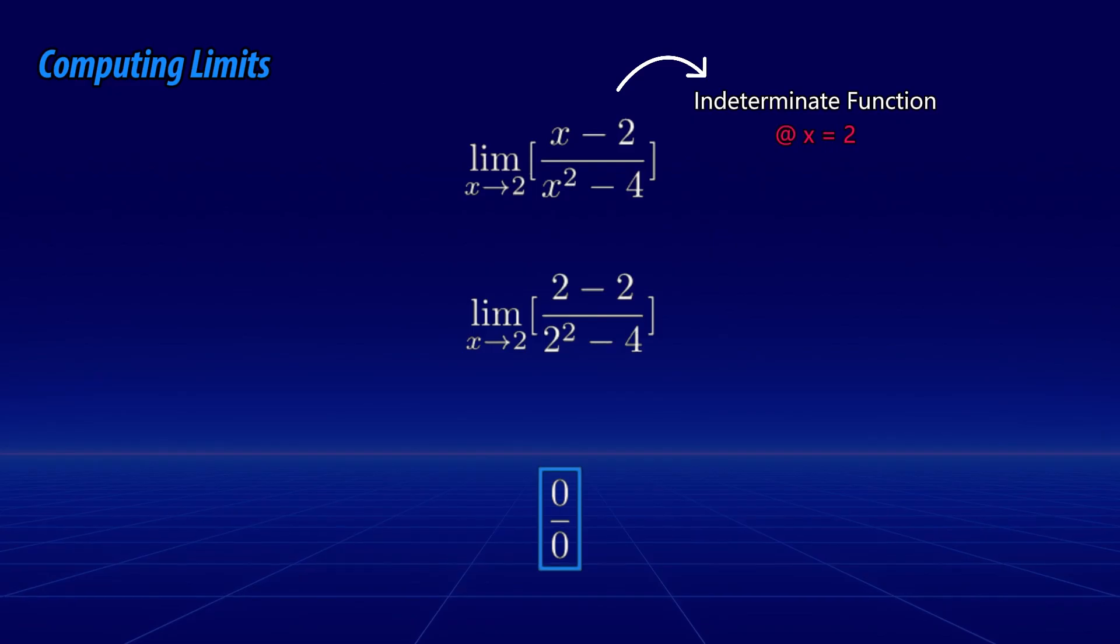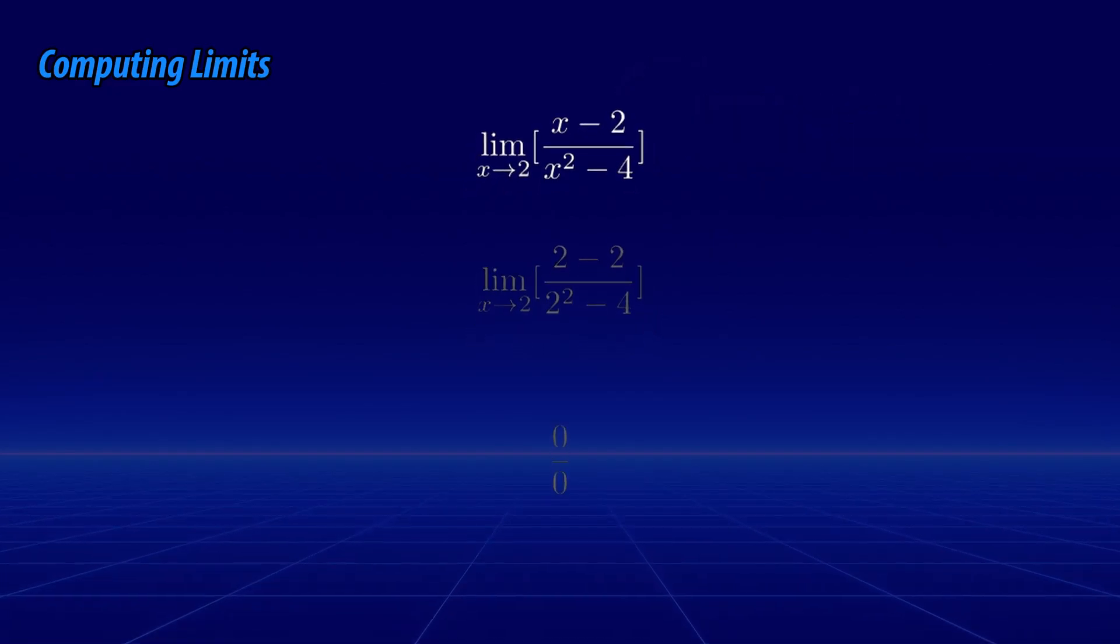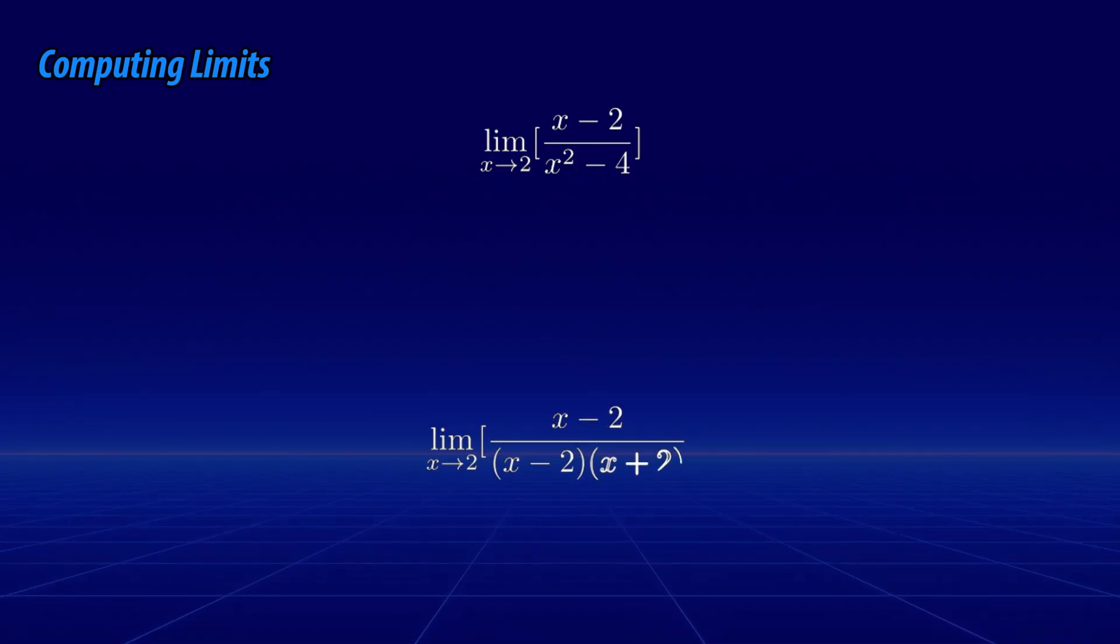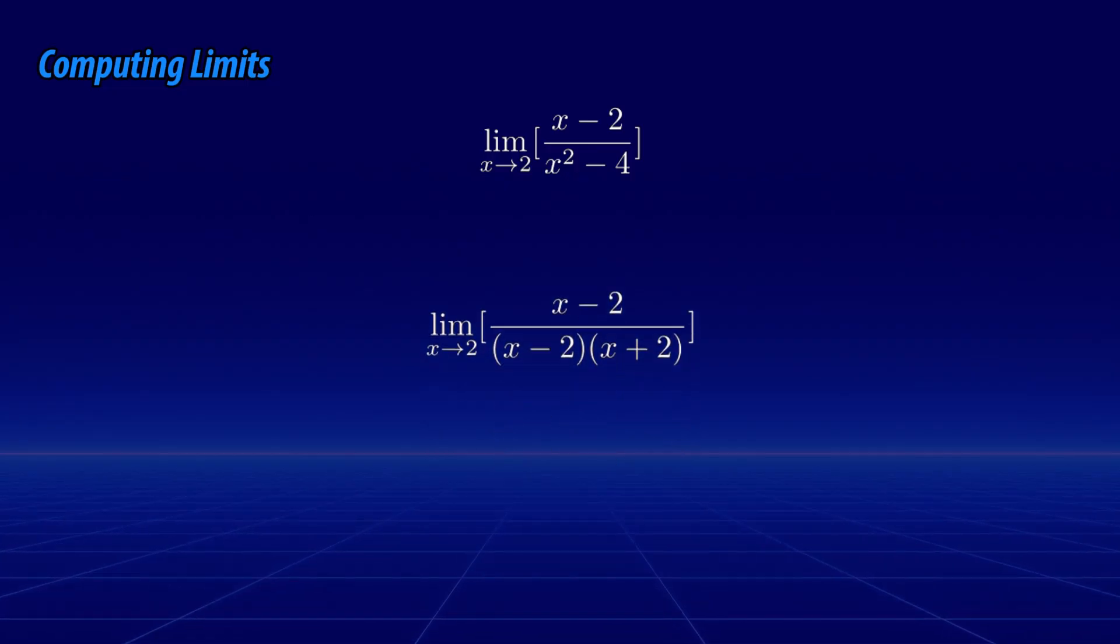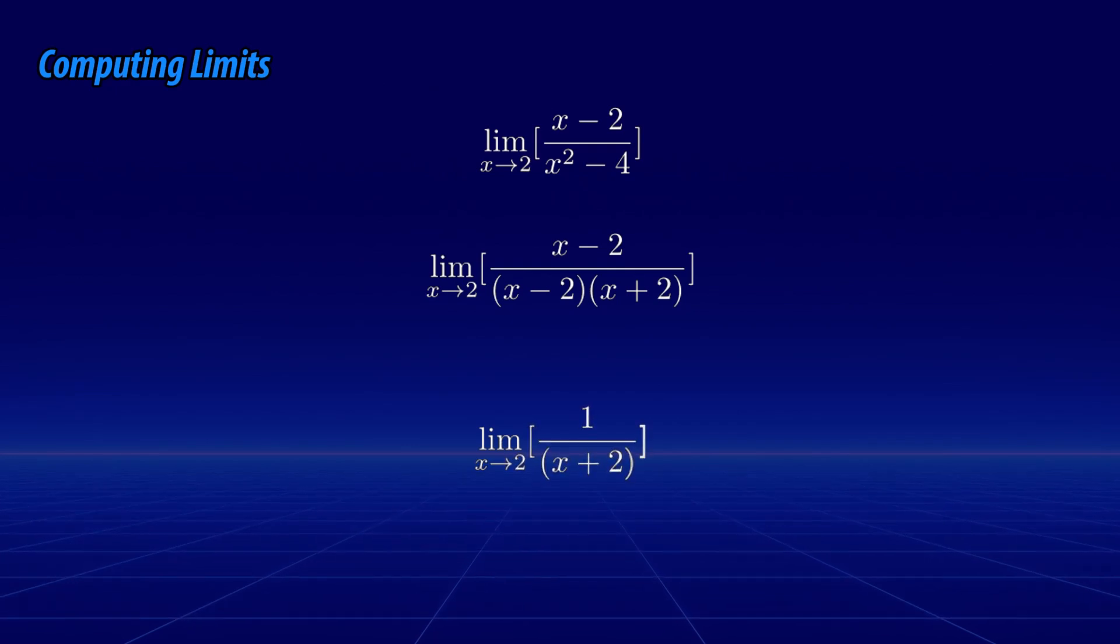So how do we find the limit? The first thing that we should always do when evaluating limits is to simplify the function as much as possible. In this case, this means factoring our function and simplifying it as much as possible. Doing this results in the following.